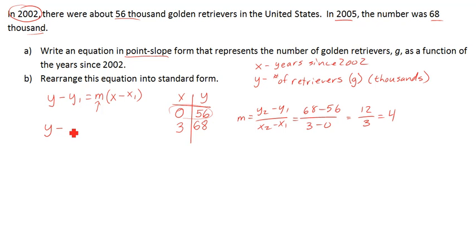So I'm going to go y minus 56 equals the slope, which is 4, times x minus x1, which is 0. The 0 is the x value from that point, and the 56 is the y value. So this right here is acceptable for part a. Would it be nice if we simplified? Yeah, but at this point it's okay.